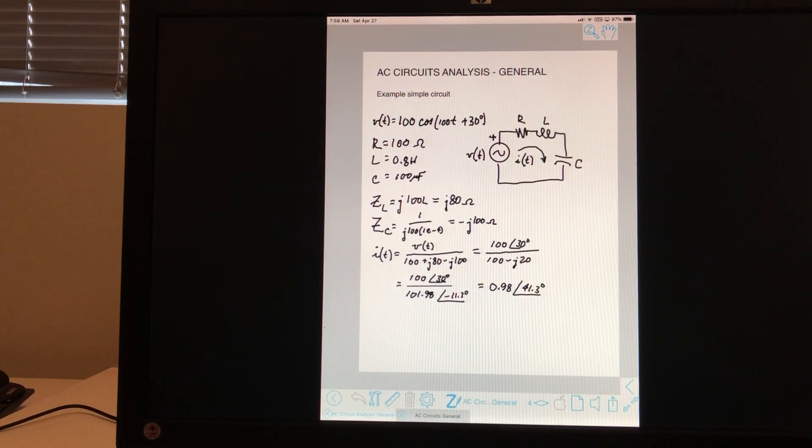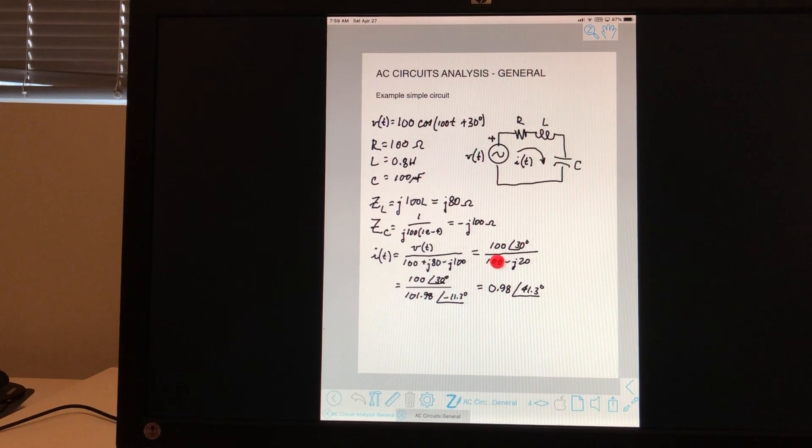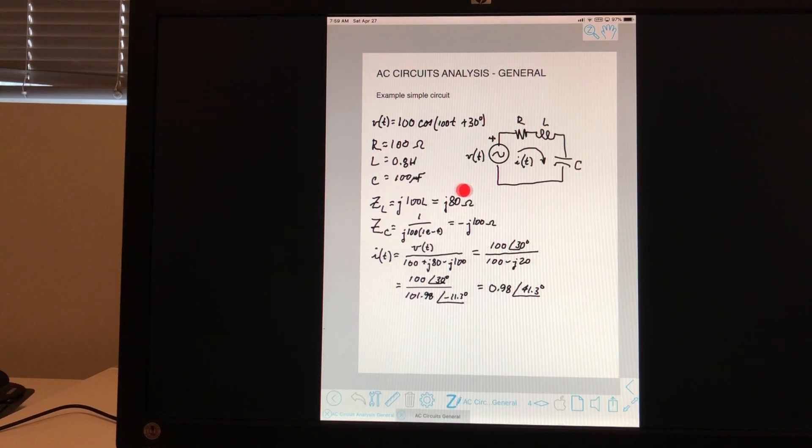And so that is the expression for the current. Note that what we don't have in these representations, in the polar or rectangular, we don't have frequency in there. We are assuming that the frequency is the same throughout the circuit. And that's true as long as the circuit is a linear circuit.